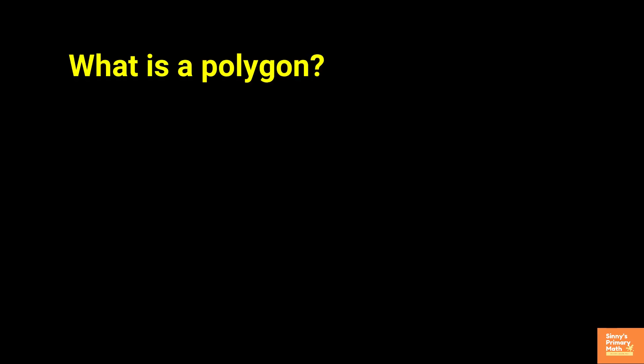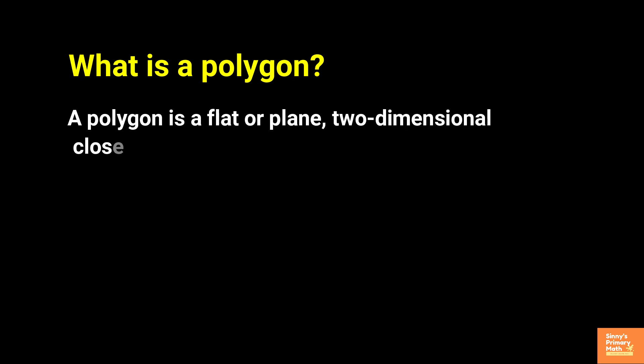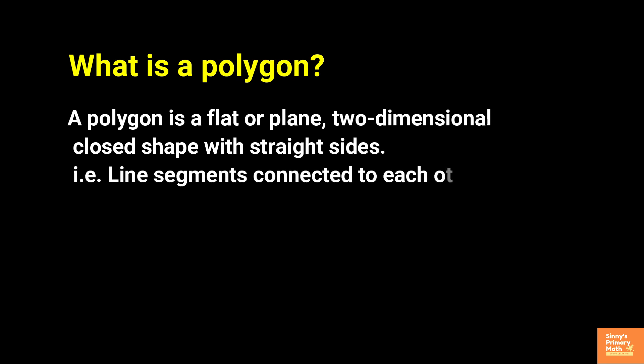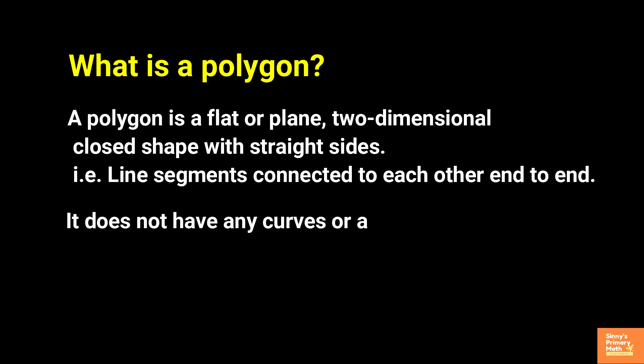The word polygon comes from the Greeks, commonly used in geometry. It means poly — many — gon — angles. What is a polygon? A polygon is a flat or plane two-dimensional closed shape with straight sides, that is, line segments connected to each other end to end. It does not have any curves or any gaps or openings in its shape. Common examples of polygons are shown.